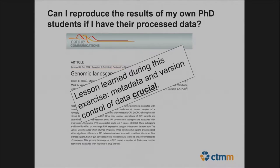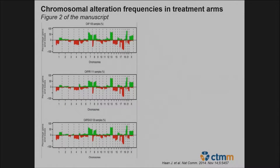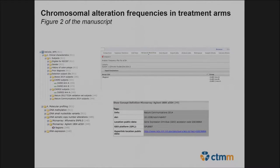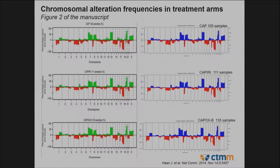This enables us to ask: can I reproduce the results if I have the processed data of my PhD student? What we really learned during this exercise is that even if you have the paper, metadata and version control of the data is really crucial. This is figure two of the manuscript, showing chromosomal alteration frequencies in different treatment arms — ChIRO arm A, arm B, and ChIRO 2 arm A — plotted as frequency of increase versus decrease in genetic material. In the study tree we create extra notes to select patients, put in the regions file, press run, and the frequency plots are exactly the same.